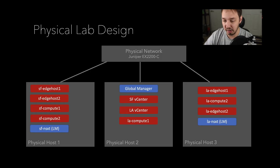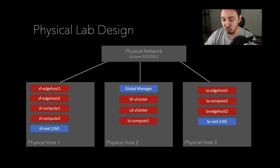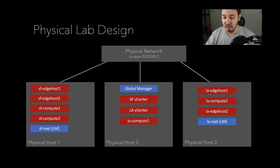This is my home lab. I have a Juniper EX-2200 switch that I can't stand. For the vSphere hosts, I have three physical hosts — I've actually added another one since then, so I have four now — but this is conceptually the same thing. I'm doing nested ESX for this entire federation lab. I have two locations: San Francisco and Los Angeles.